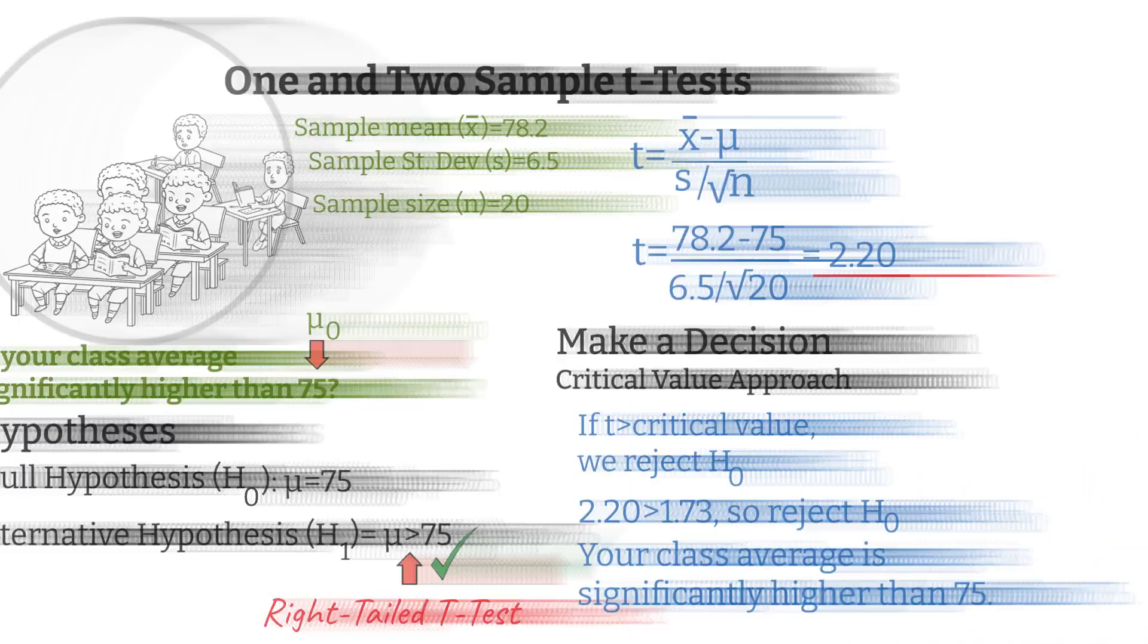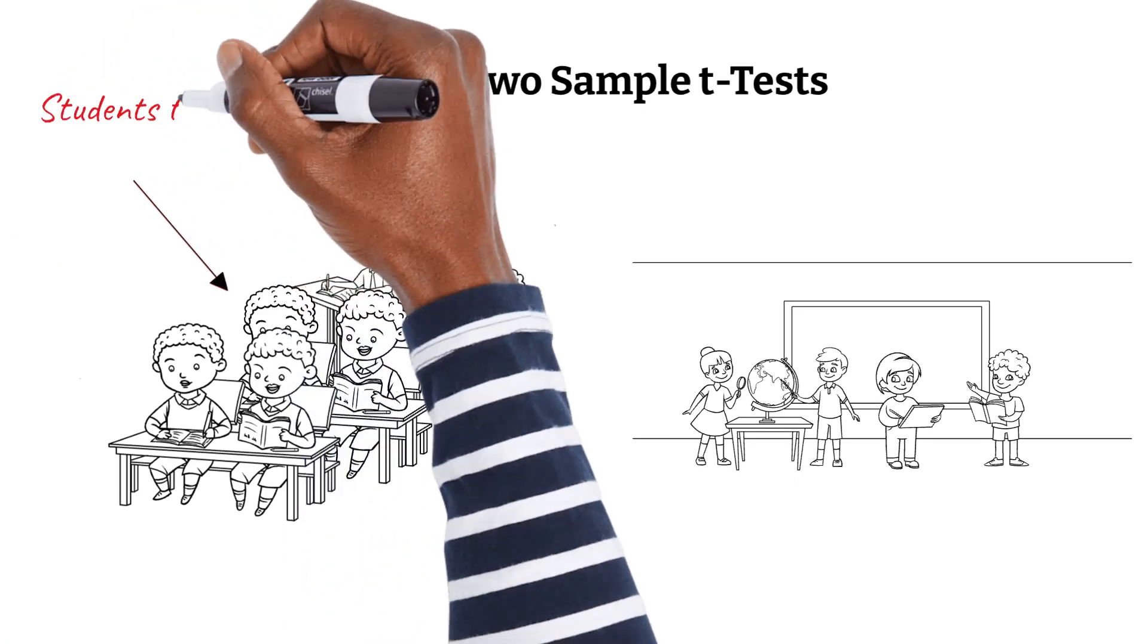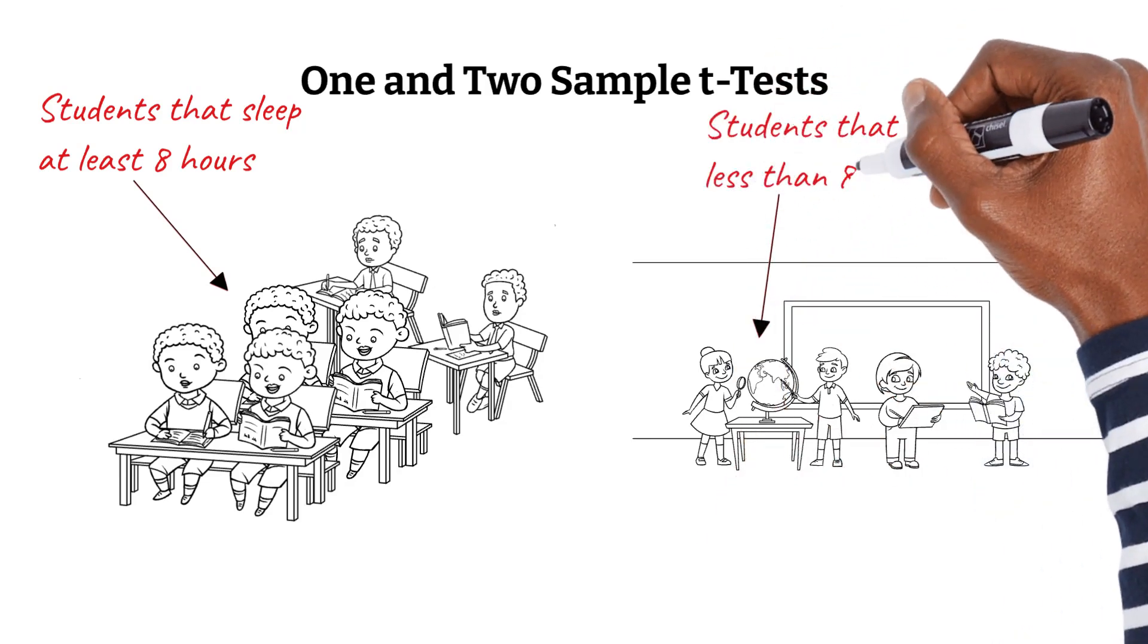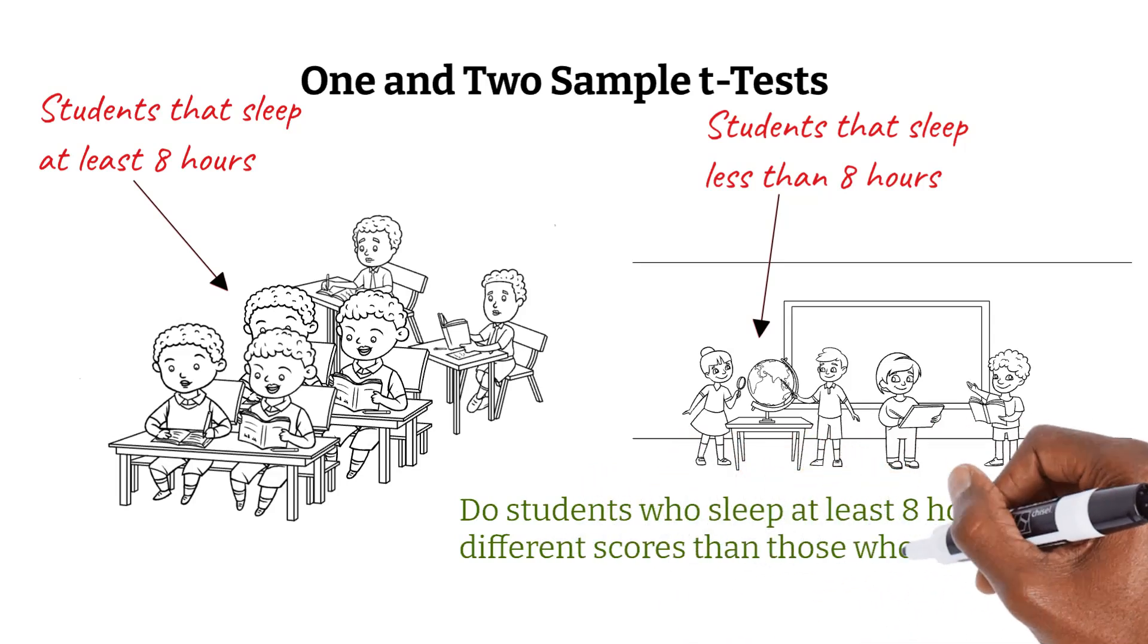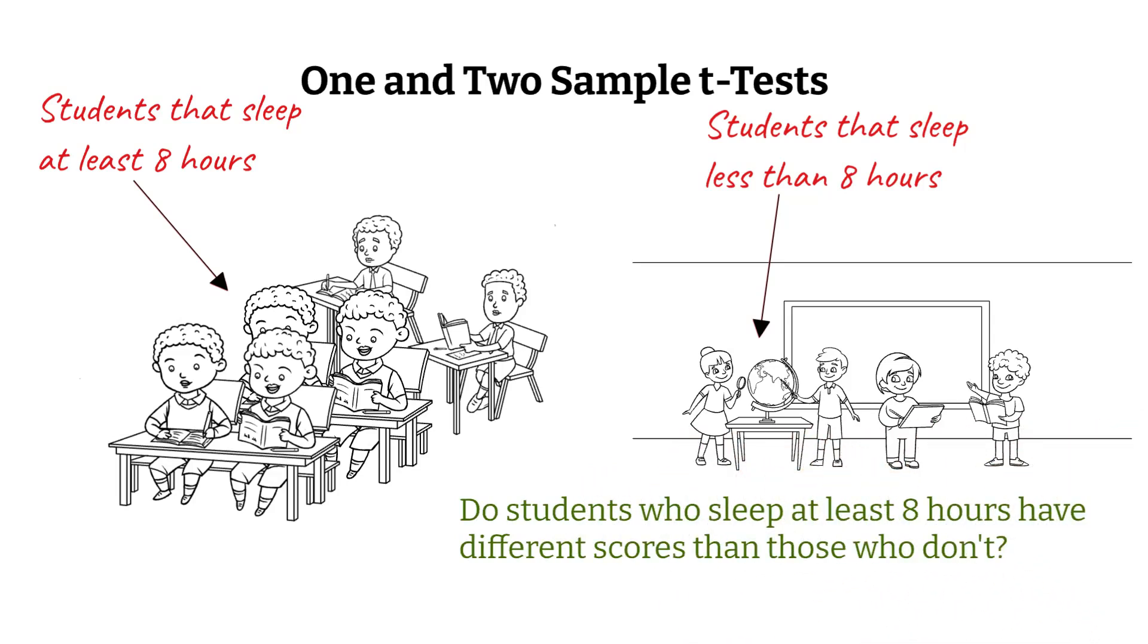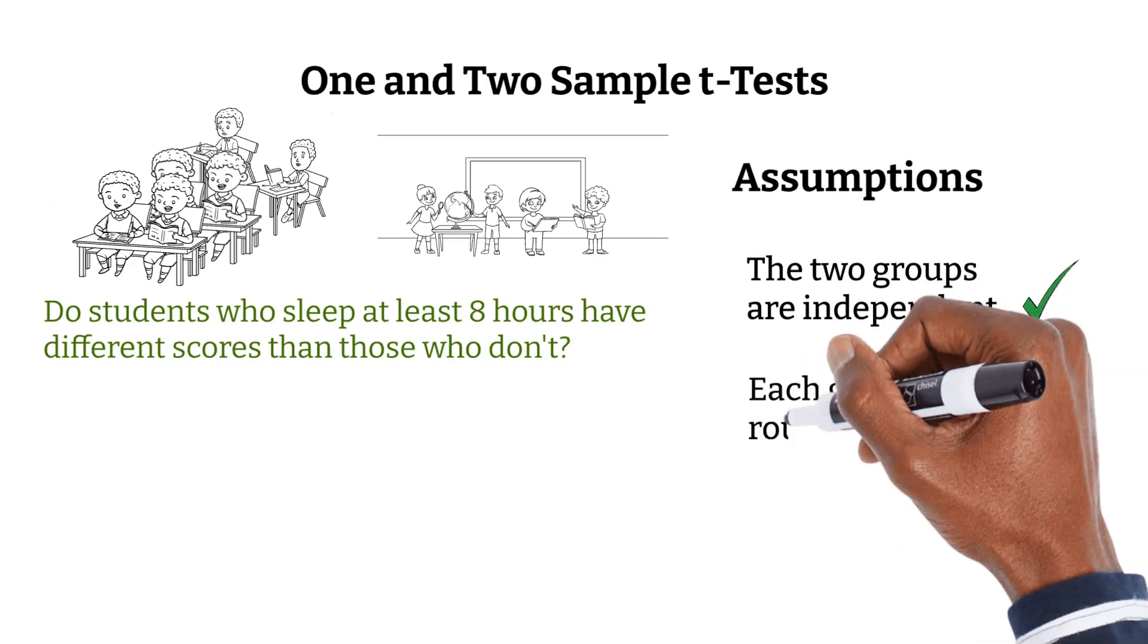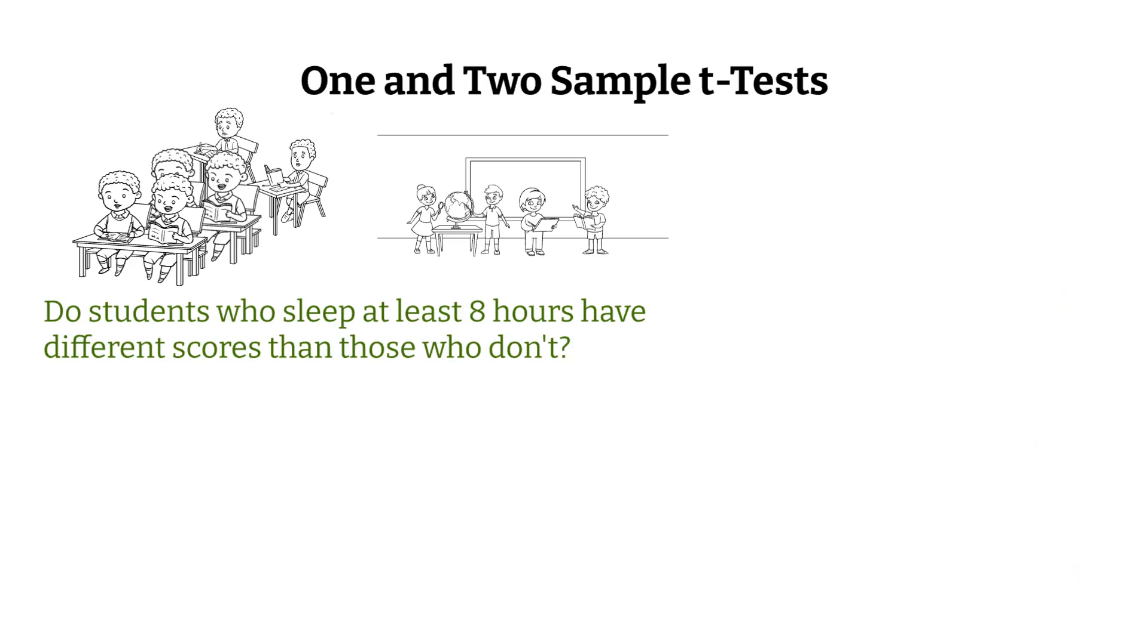Now, let's shift gears to a two-sample t-test, used when you want to compare the means of two independent groups. Here's the scenario. Do students who sleep at least 8 hours have different scores than those who don't? First, we need to check the following assumptions. The two groups are independent. Each group is roughly normal. The data was collected randomly. All right, now we're ready to state our hypotheses.